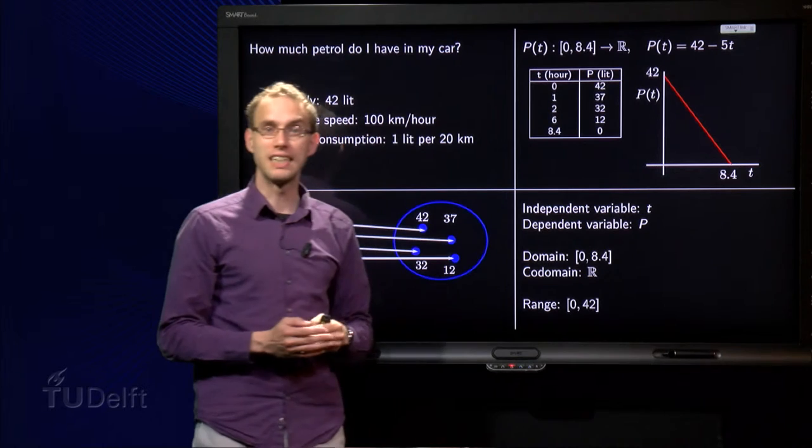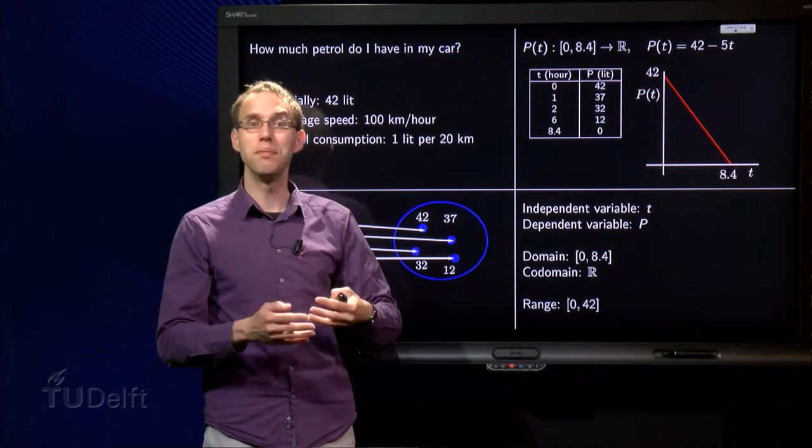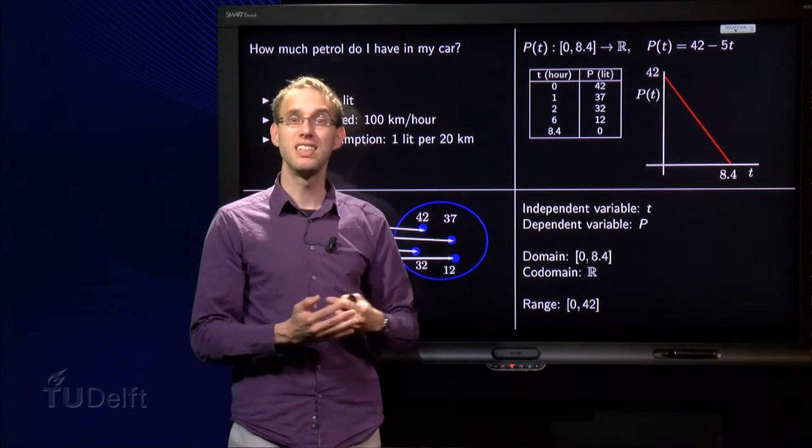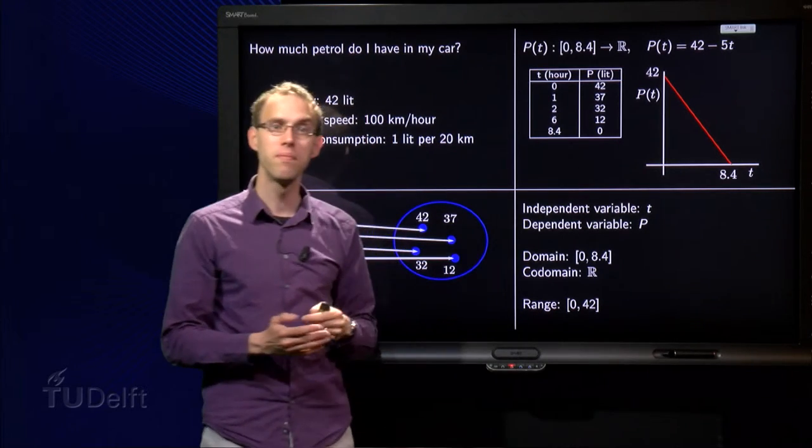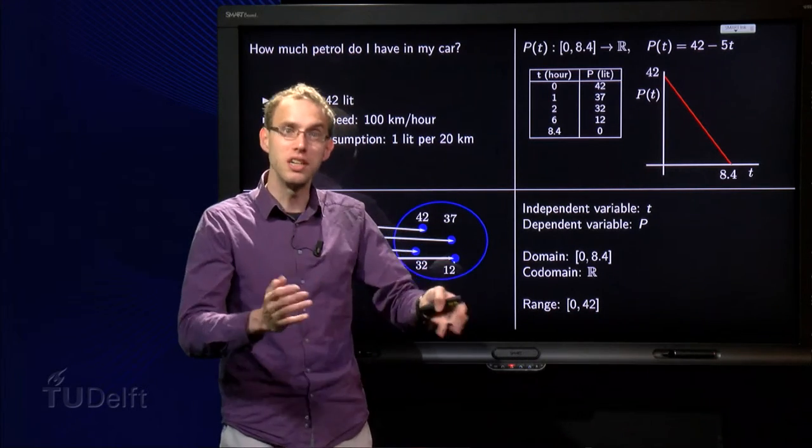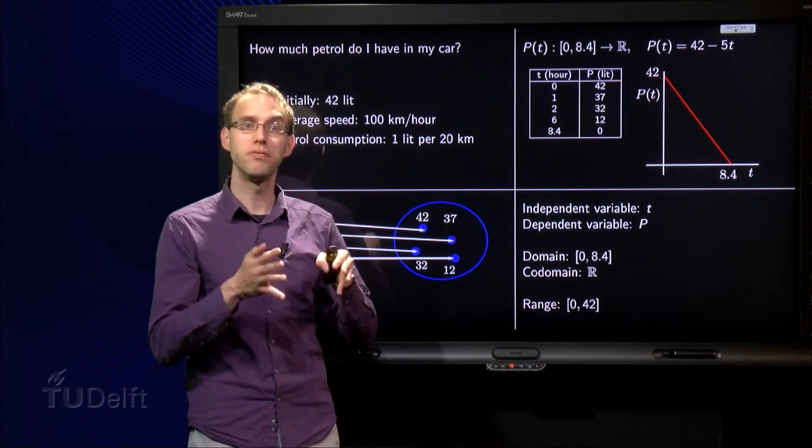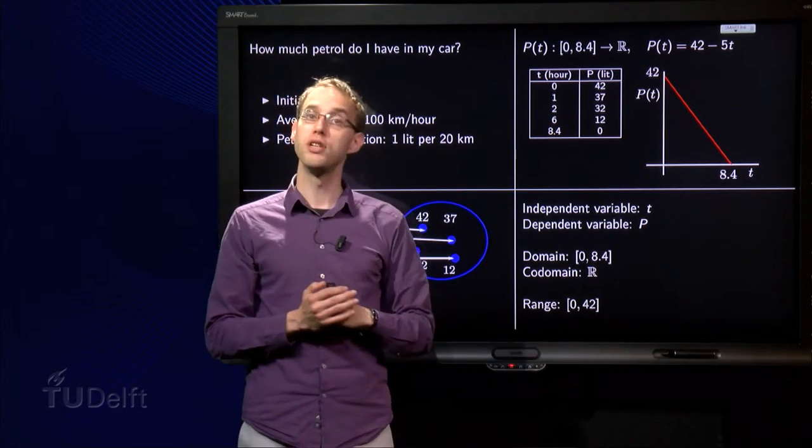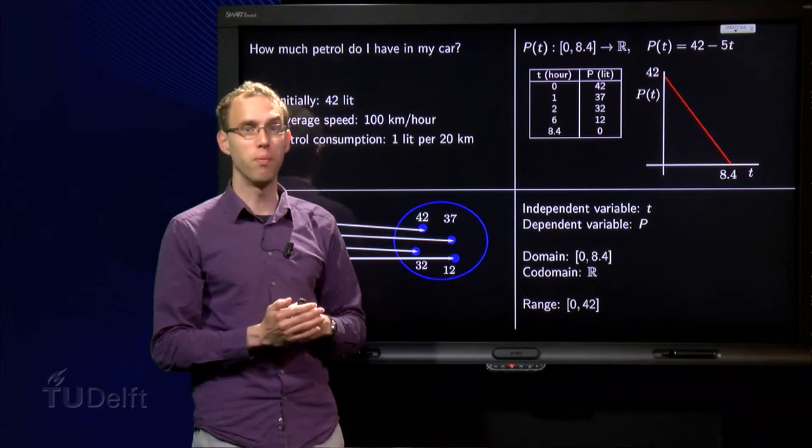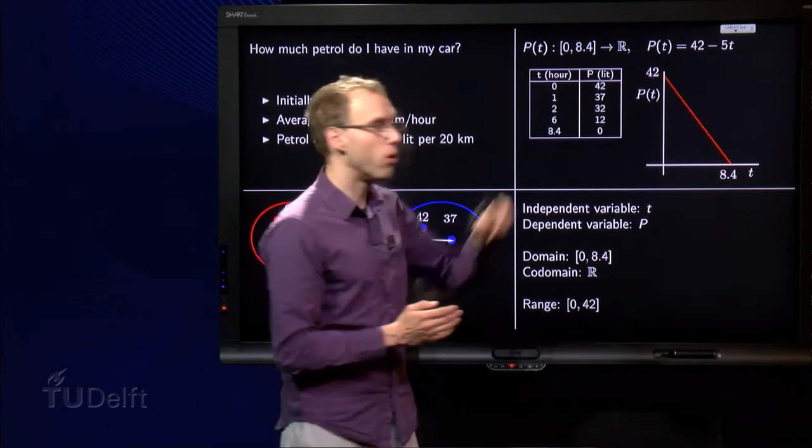Proved on the x-axis, you can choose T independently, you can choose whatever T you like, as long as you are in the domain. But once you have chosen this independent T, P, the amount of petrol, is fixed. And that's why P is called the dependent variable, living in the codomain.